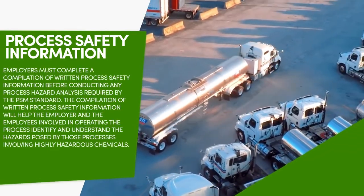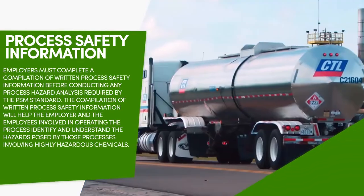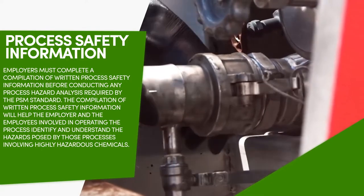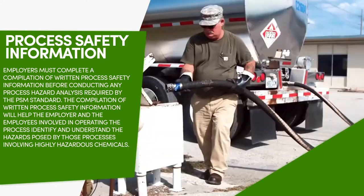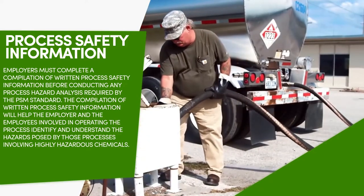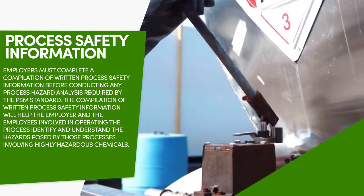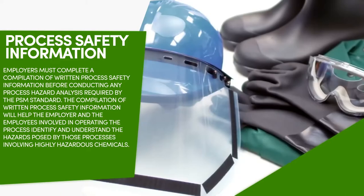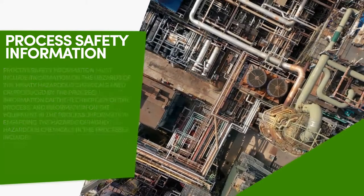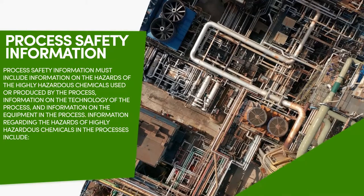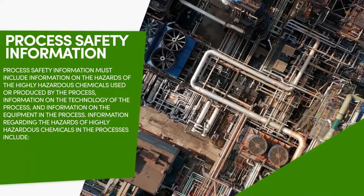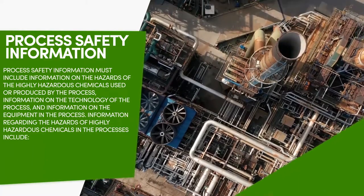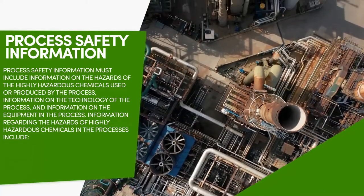Employers must complete a compilation of written process safety information before conducting any process hazard analysis required by the PSM standard. This compilation will help the employer and the employees involved in operating the process identify and understand the hazards posed by those processes involving highly hazardous chemicals. Process safety information must include information on the hazards of the highly hazardous chemicals used or produced by the process, information on the technology of the process, and information on the equipment in the process.